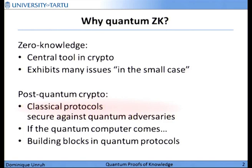More precisely, what we are doing here is post-quantum crypto, meaning we consider classical protocols — some zero-knowledge protocol like for graph isomorphism that everyone knows — but we ask whether it is secure against adversaries with quantum computers.